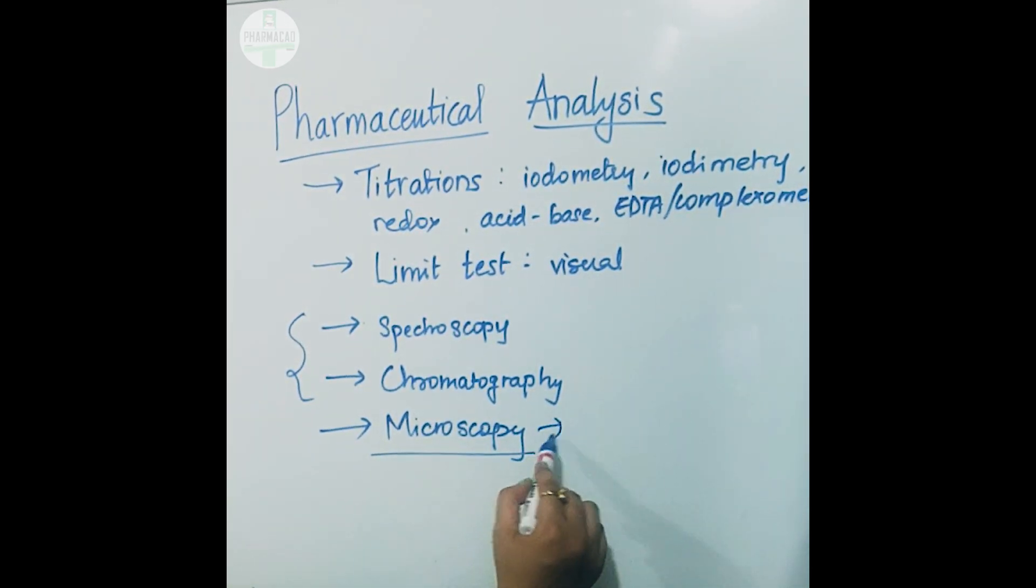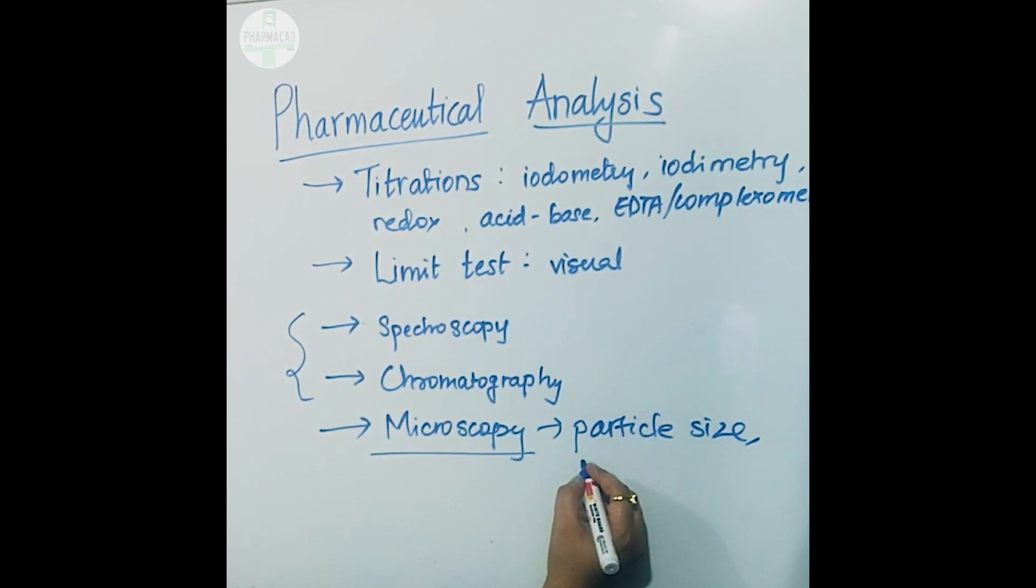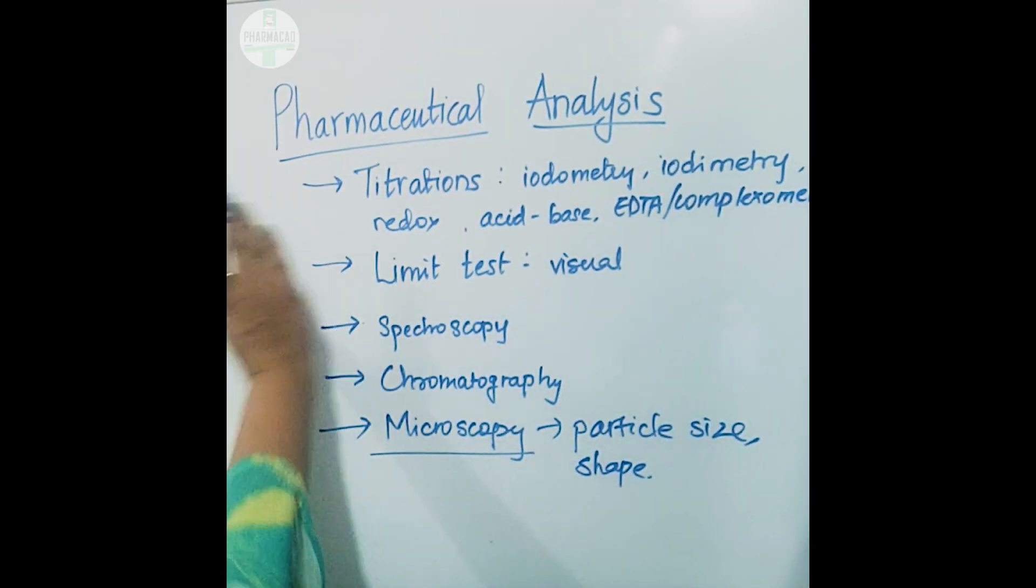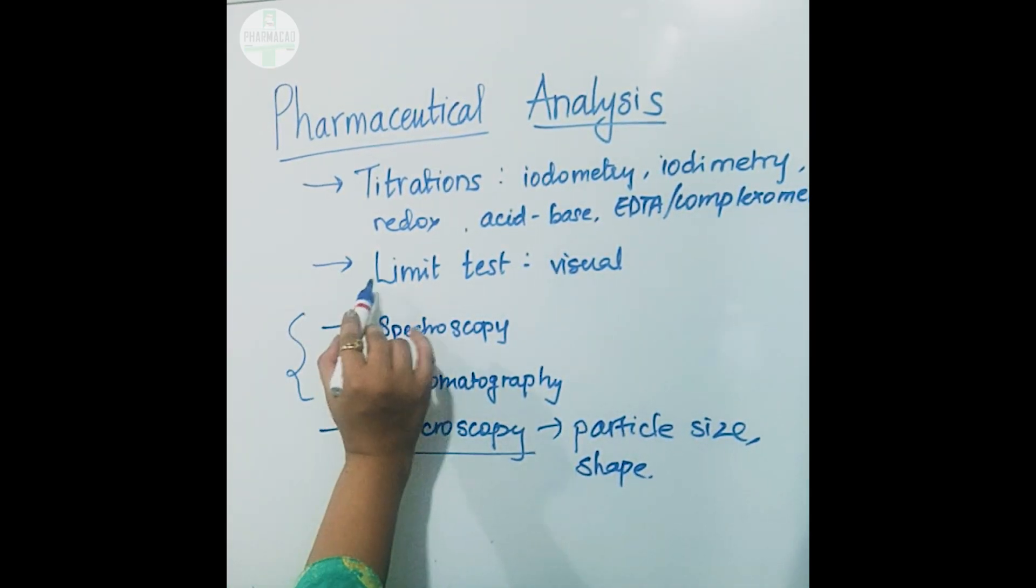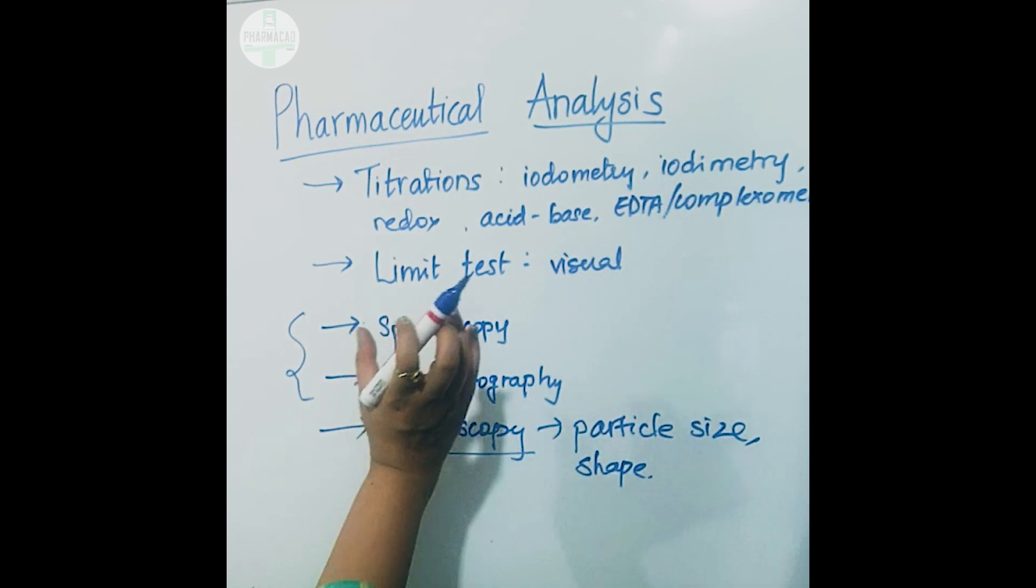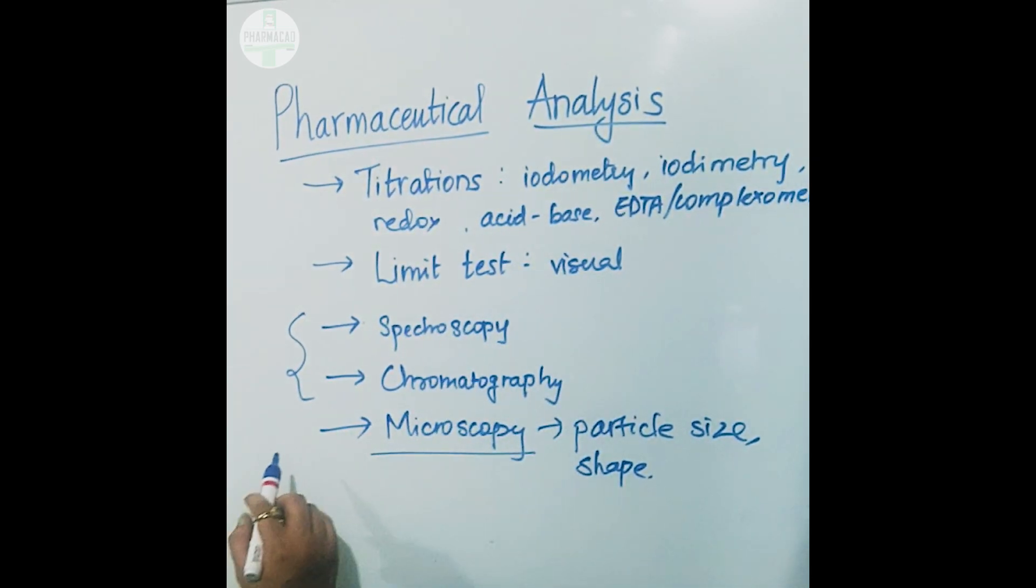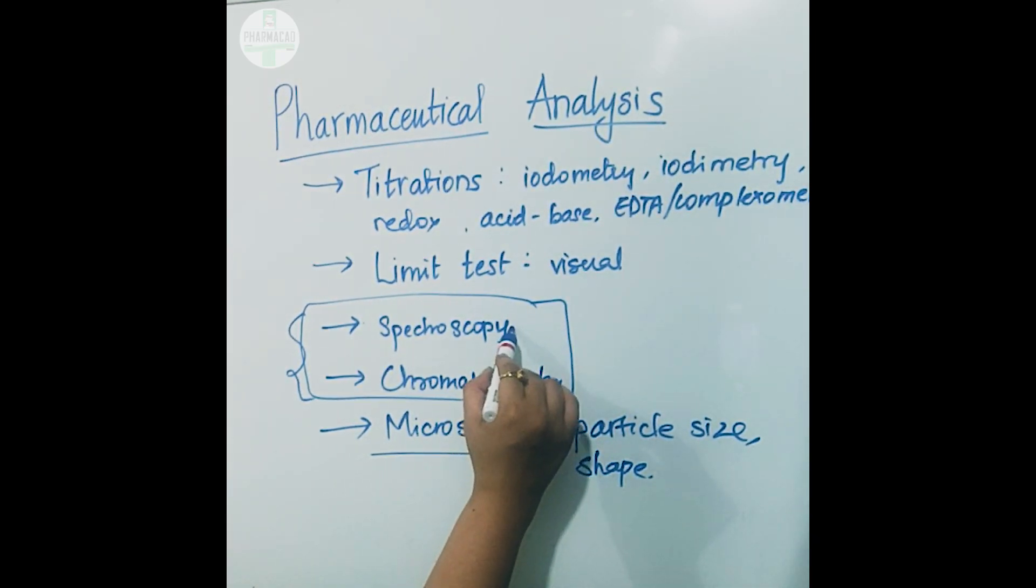Microscopy is nothing but doing your particle size analysis or shape of particles, etc. Titrations, you are very well aware since the beginning. Limit test is not very important because they are more of visual methods. What we focus more is on these two, chromatography and spectroscopies. I would be going in depth with the term spectroscopy.